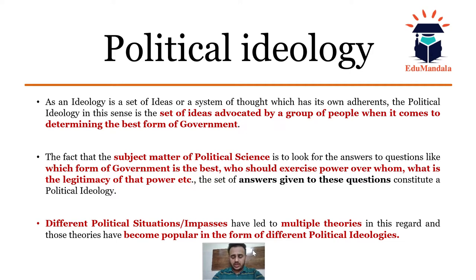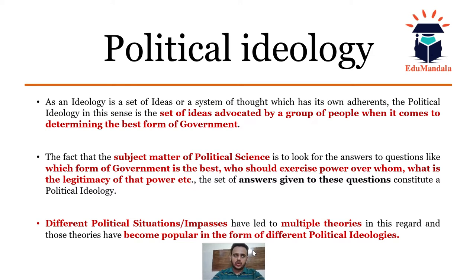In political science, the subject matter involves considering different ideologies and looking at questions like: what is government, which form of government should there be, who should exercise power, who should exercise authority, and what is the legitimacy of that authority or power being exercised by the government. When we answer these questions — which form of government is best, who the ruler should be, how people should be governed, what the relation is between government and citizen — those answers come in the form of multiple theories, which have become popular as different political ideologies.